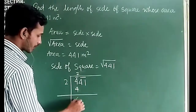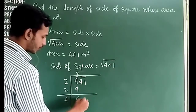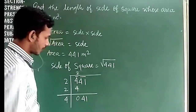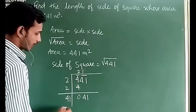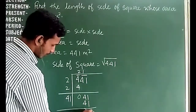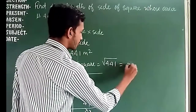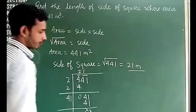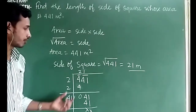Now we double 2 to get 4, and find a digit such that 4_×_ ≤ 41. That digit is 1, since 41×1 = 41, giving remainder 0. So √441 = 21. The side of the square is 21 meters.